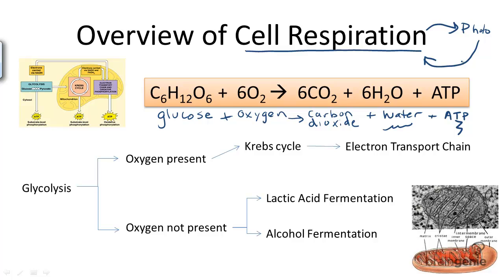What exactly happens during cellular respiration? In eukaryotic cells, if oxygen is present, it is known as an aerobic process. If oxygen is available, cellular respiration takes place in three steps: one, glycolysis; two, the Krebs cycle; and three, the electron transport chain.